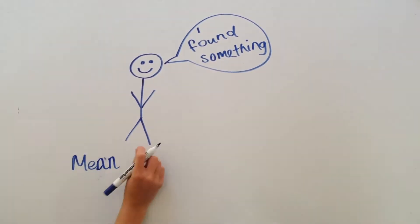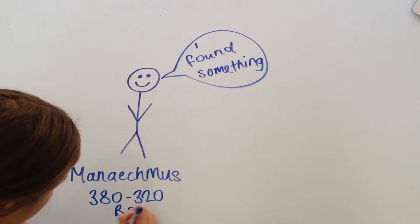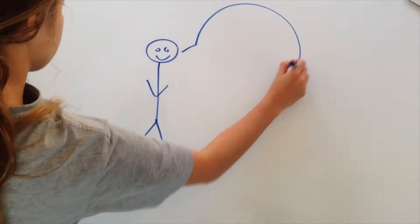Manichemus discovered parabolas, Apollonius named them parabolas, and Gregory then studied more properties of the parabola.